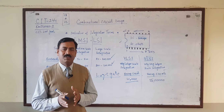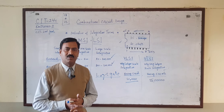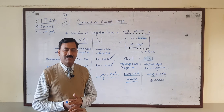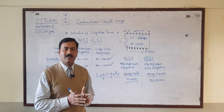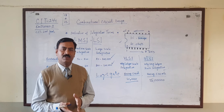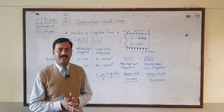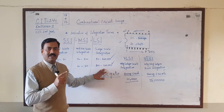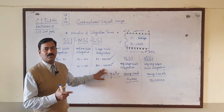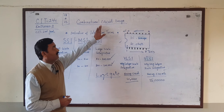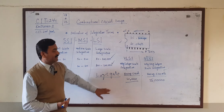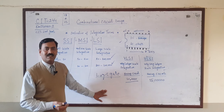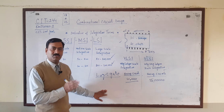The combination circuits are those that we use in addition, subtraction, multiplication, logic multiplication, coding, decoding, and multiplexer — these are all combinational logic circuits. The input and output of the gate and circuit are studied in detail, and in coming lectures we will cover combinational logic circuits step by step.